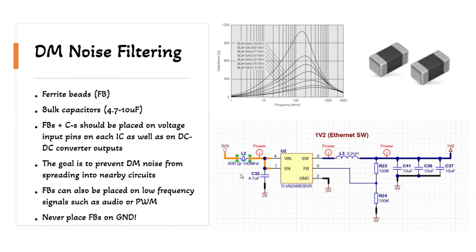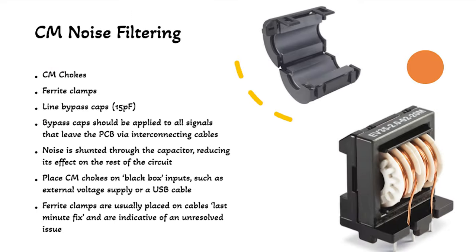Another thing we use frequently is capacitors and ferrite beads. We use ferrite beads on the power supply pin to each IC, and we use capacitors to filter out noise between the power supply and ground. Both are examples of dealing with differential mode noise. You can sometimes also see common mode noise filters on power supply and interconnects — those would be common mode chokes. What I tend to do is install a ferrite bead on every power supply pin of the IC.